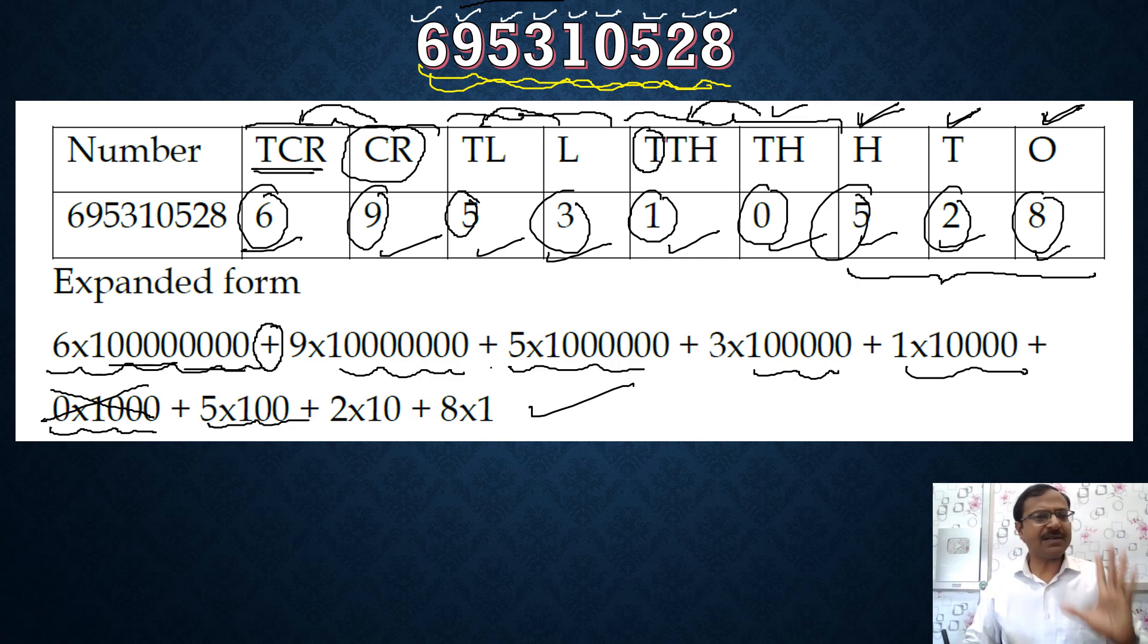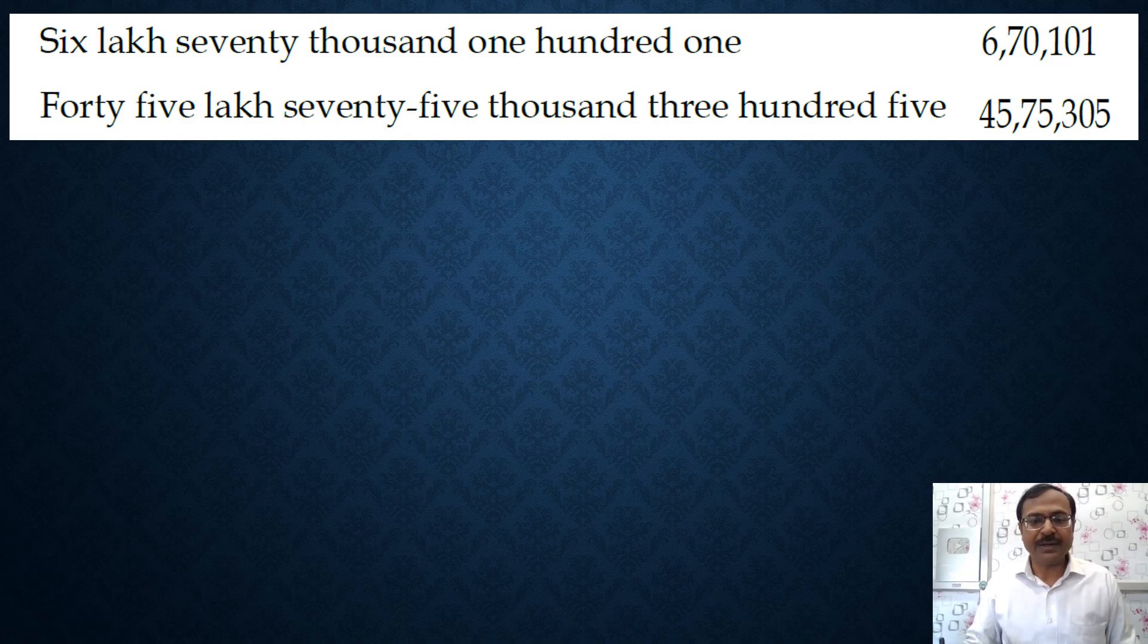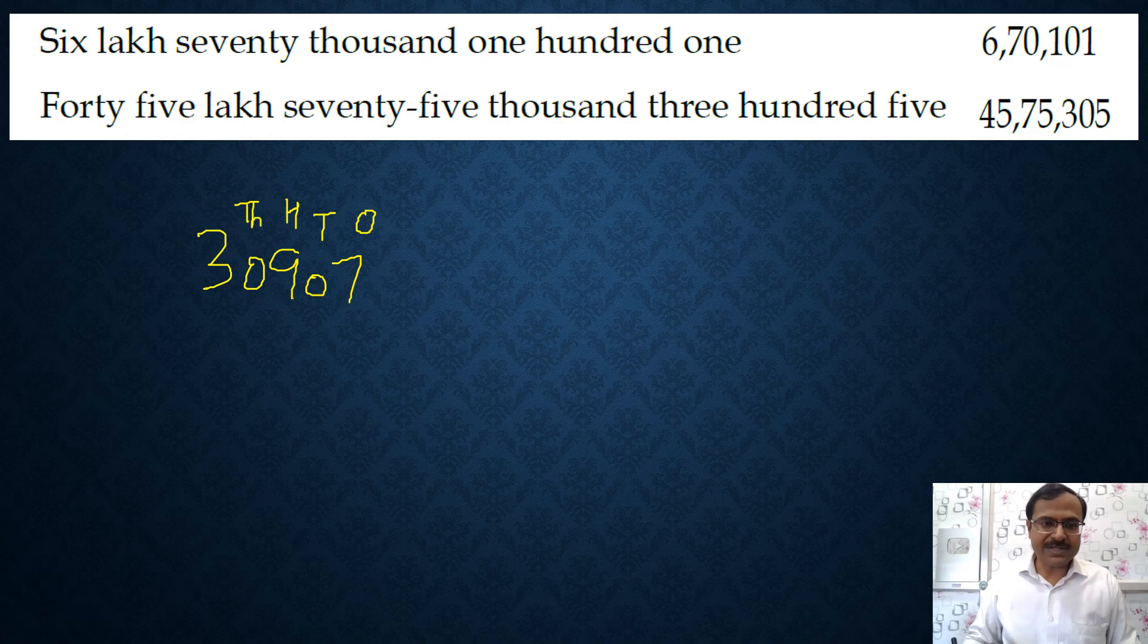So this is the first concept, the placement box concept. Let's have the second concept now. The second concept is when you have to write the number in the expanded form. Now this is where the students falter. So we have, or you can write the numeral value of an expanded form which is given to you. Suppose I give you 30907.